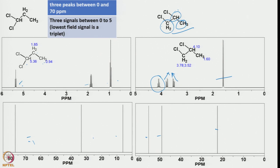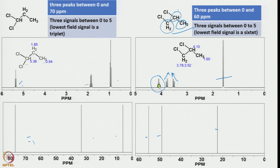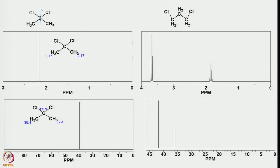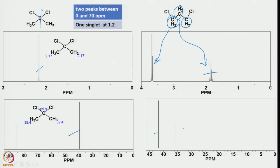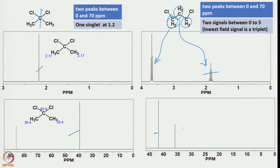So now: 3 signals between 0 to 5 ppm, lowest field signal is a triplet — that information corresponds to 1,1-dichloropropane. The one showing 6 lines corresponds to 1,2-dichloropropane. The one showing a singlet in 1H NMR with 2 13C signals is 2,2-dichloropropane. The one showing a quintet and triplets with 2 signals is 1,3-dichloropropane.